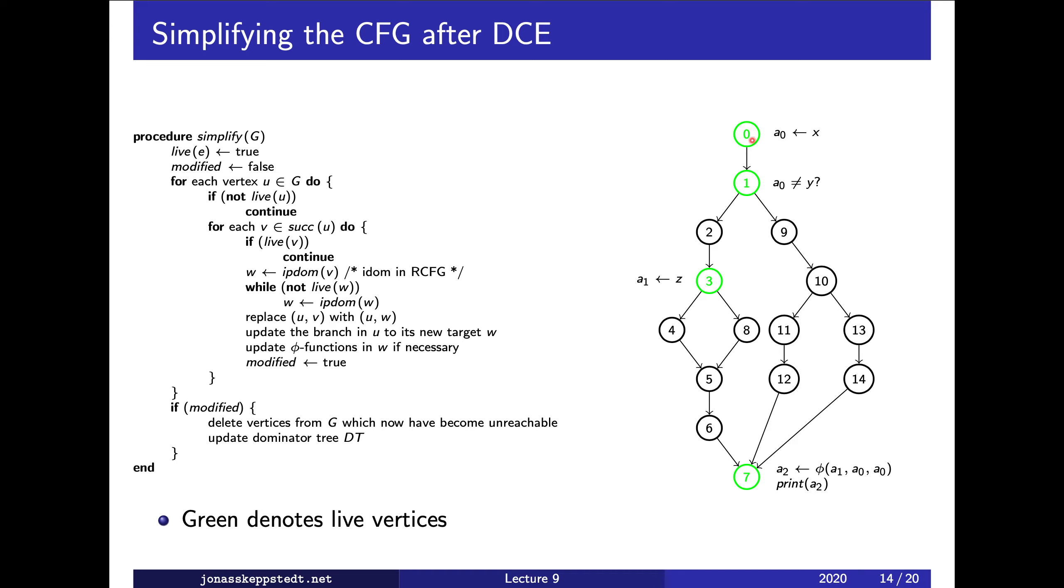We check each successor. If the successor is live, we don't do anything because we should just use the branch to go there. But if the successor is not live, then we want to find the best way to go somewhere else, namely some other vertex. The question then is which vertex should we branch to? We can see this case: we have a successor of one which is not live, so we should branch to three instead.